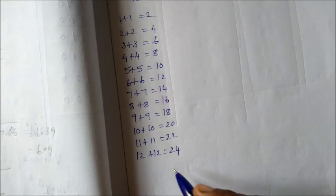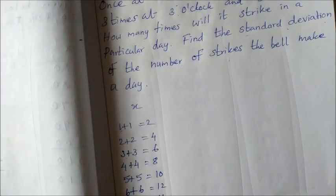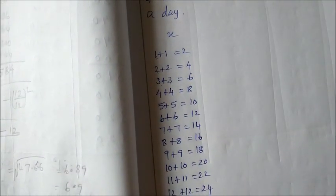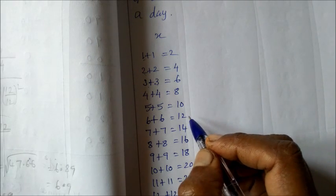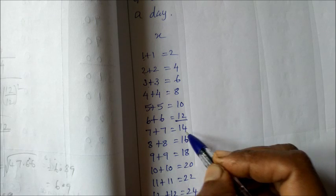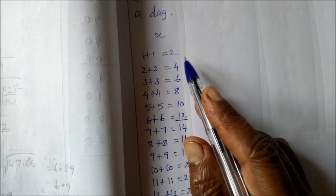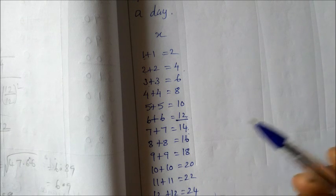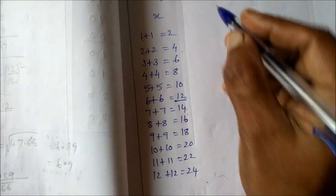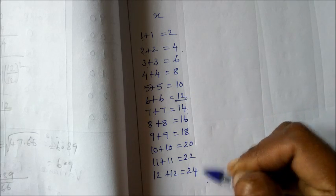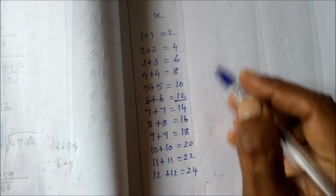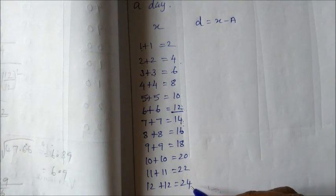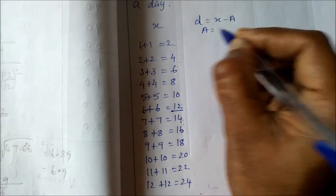Okay, so we have 12 X data values. We can use the direct method or assumed mean method. Let's use assumed mean method to avoid large calculations. We can take assumed mean as 12 or 14. Let's take 12 as the assumed mean to avoid negative and positive numbers together. Then d equals x bar minus a.